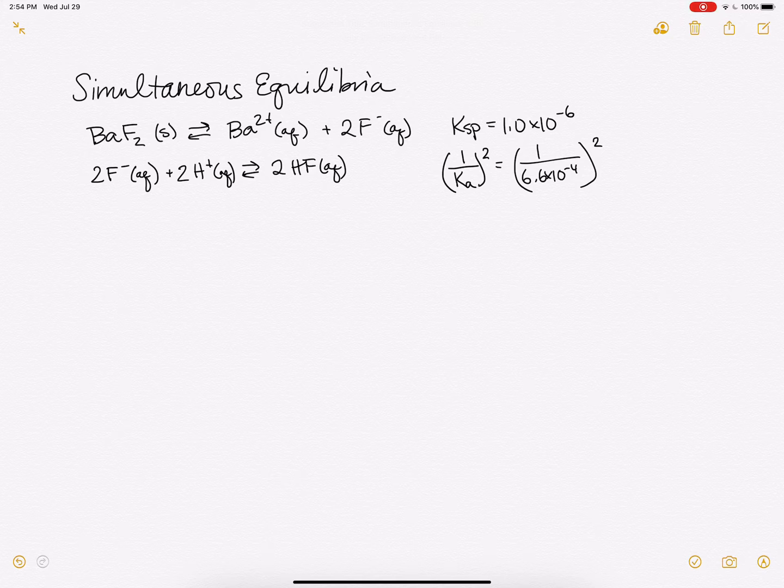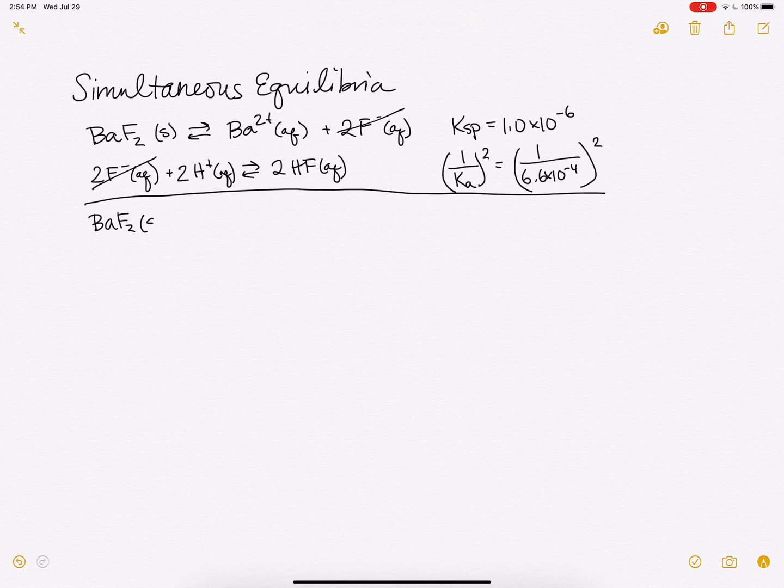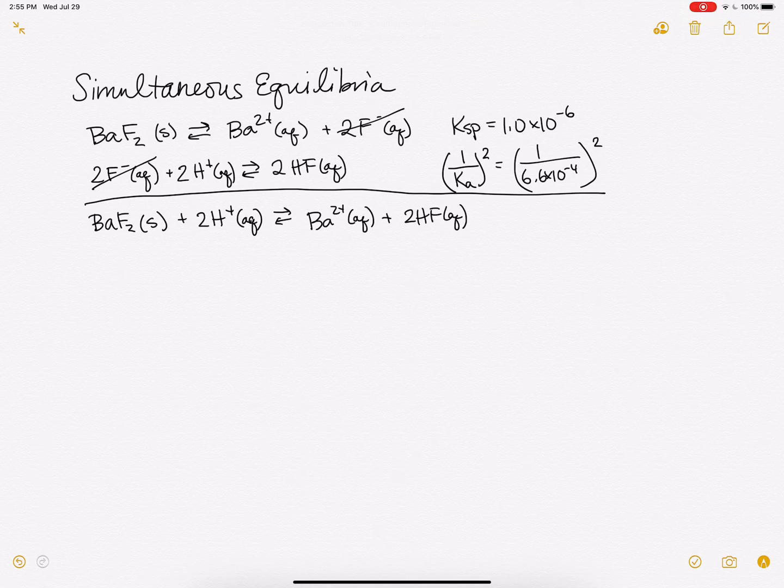Now, here's the deal. If both of these equilibria are happening at the same time in the same beaker, because we've added some acid to that beaker, well then we can write an overall reaction here. Our fluoride ions cancel out. So we'll get our barium fluoride solid plus our acid, and we'll make barium ions and hydrofluoric acid.